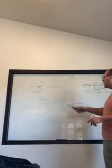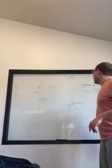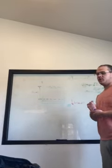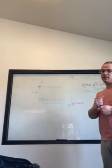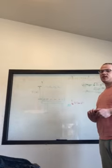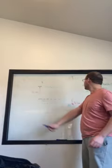Torricelli's law is used to calculate the velocity leaving a system that's exposed to atmospheric pressure. The only inputs you will need to calculate this velocity are the gravitational constant and the height of the water level, h.